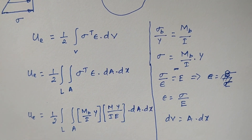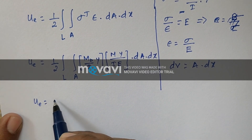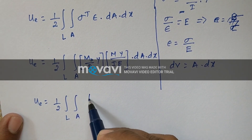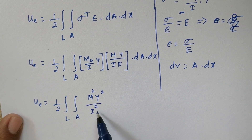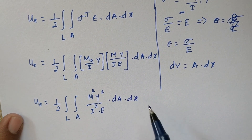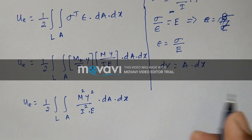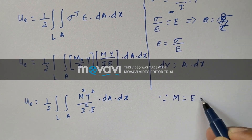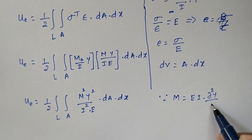We will write this function as it is. In simplification, we can write this as 1/2, over the length, over the area: m² times y², divided by i² times E, times dA times dx. Now since we know that m can be written as E·I times d²y/dx².